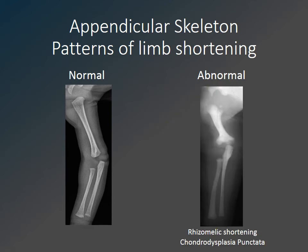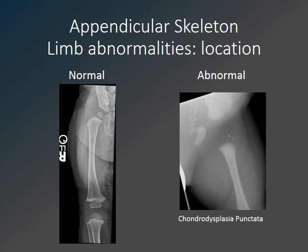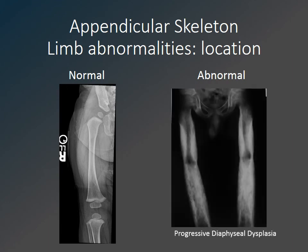Here is an example of rhizomelic shortening in a child with chondrodysplasia punctata, where the humerus is very shortened compared to the more distal segments. Within any given long bone, we want to look carefully at the growing ends. In chondrodysplasia punctata we see stippling — multiple tiny punctate dots in place of the normal epiphysis. In pseudoachondroplasia there is widening and flaring of the metaphyses of the distal radius, ulna, and hand. In progressive diaphyseal dysplasia there is marked cortical thickening of the diaphysis.